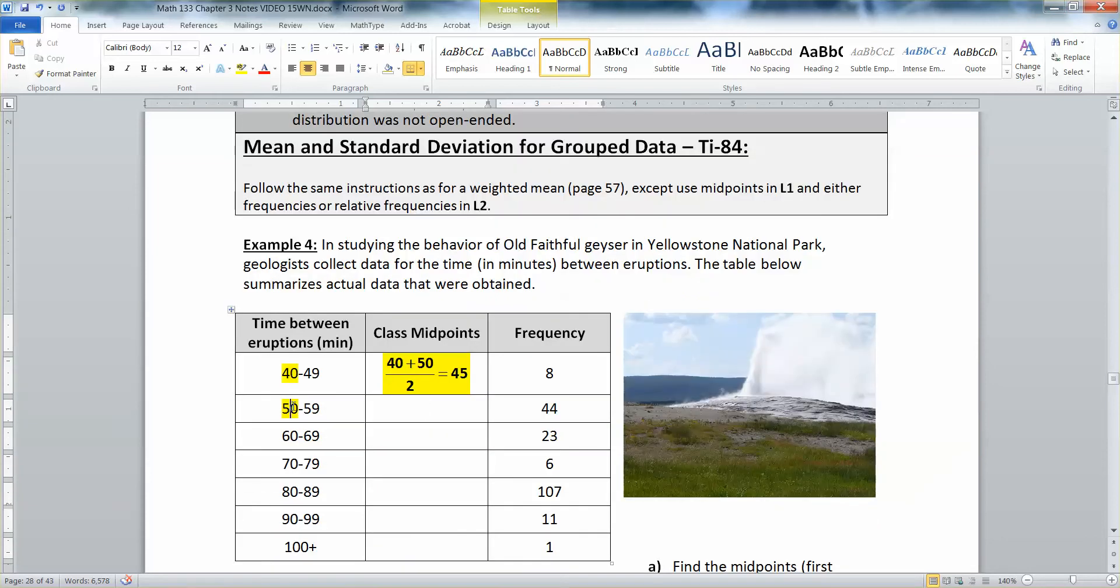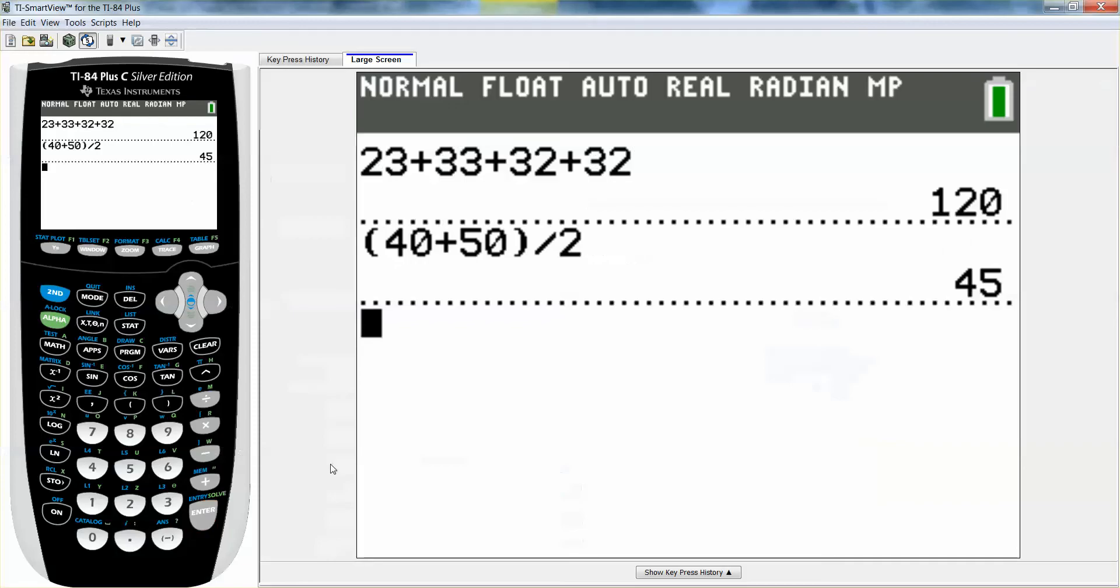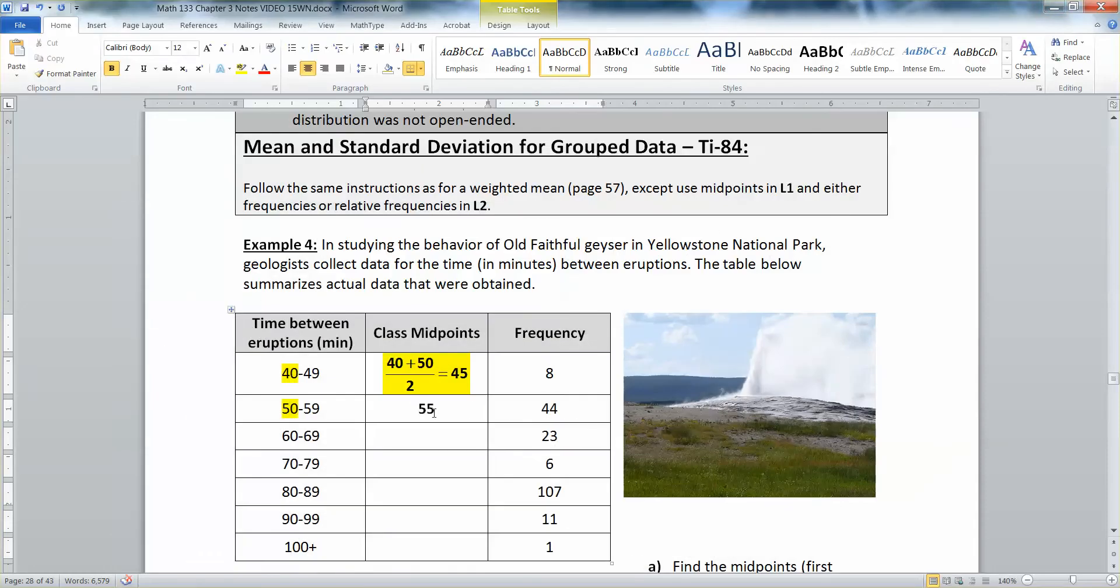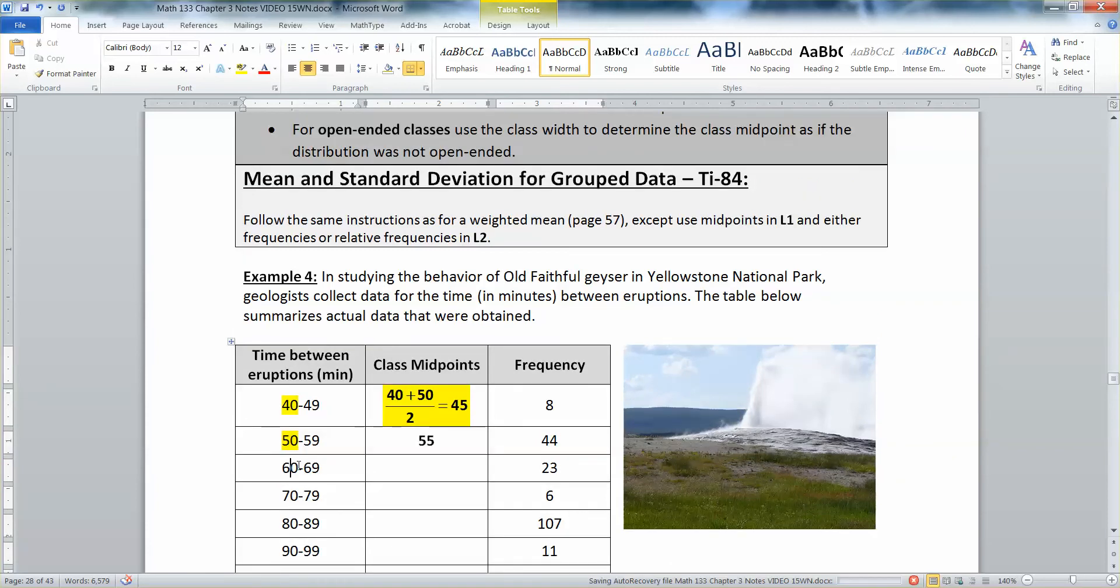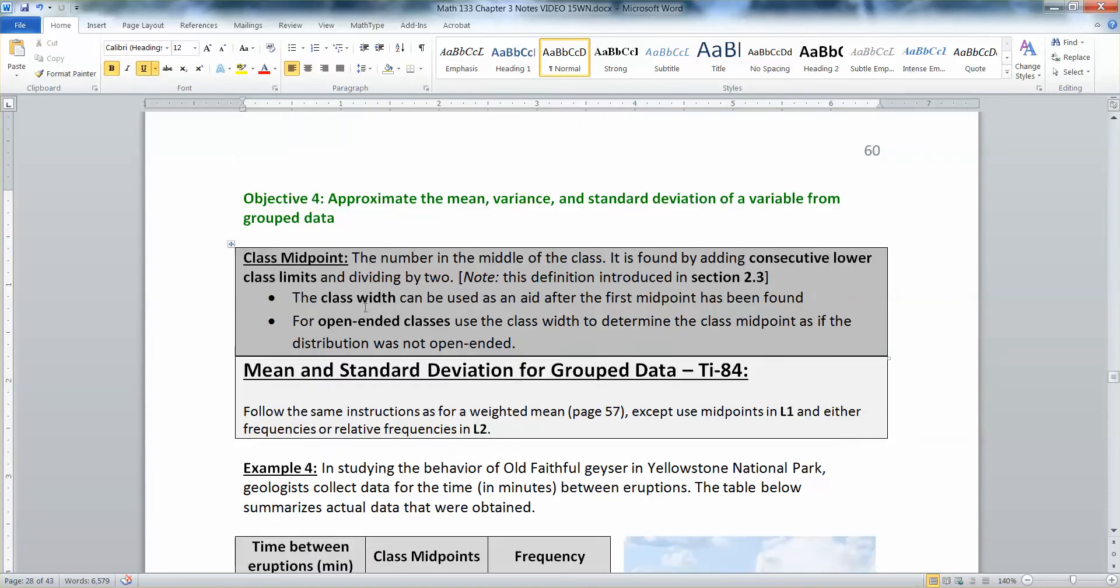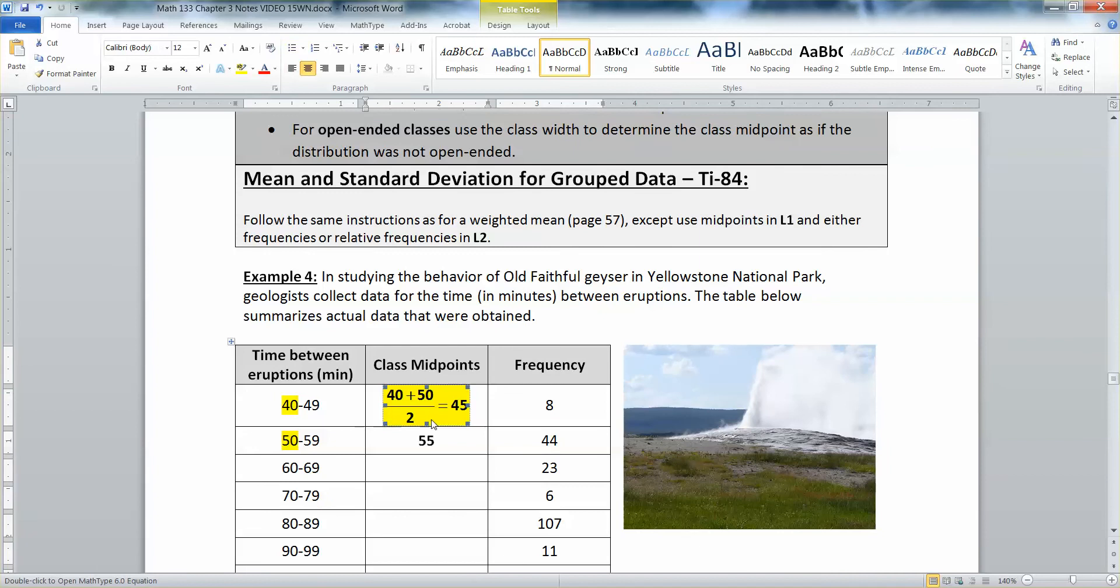Then to find the next one, you would take 50 and 60, add them up and divide by two. So 50 plus 60 added up, divide by two, would get you 55. Now you might notice there's something going on here. 40 and 50 are 10 apart. 50 and 60 are 10 apart. 60 and 70 are 10 apart. Which means you can actually use something called the class width. You could use the class width as an aid. It won't find all of them for you, but it'll find a lot of them without having to do this whole calculation. So you got to find one of them with the calculation, then you can use the class width to find the rest of them.